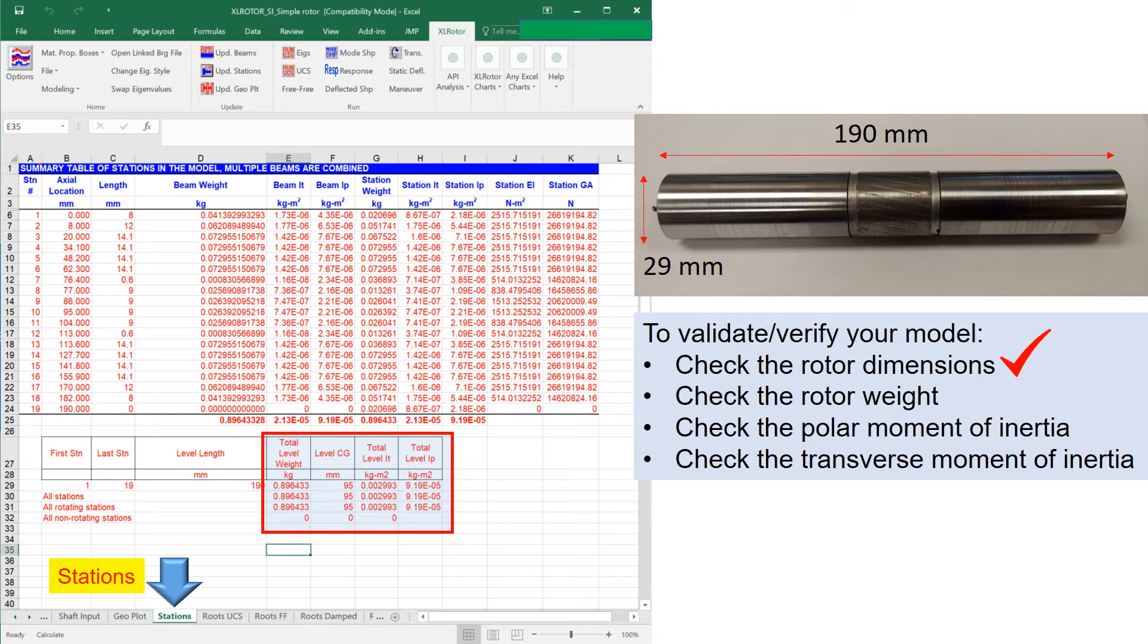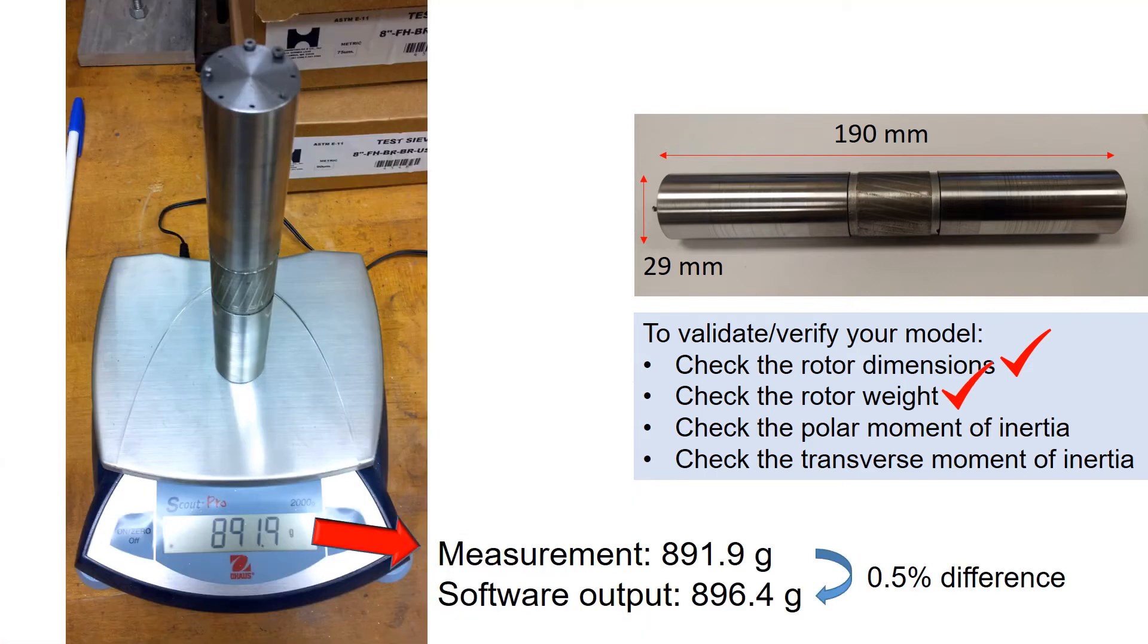Now you have to compare the outputs from the software to your measurements. Measure the rotor weight on a scale and compare the result with the software output.